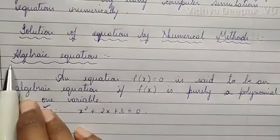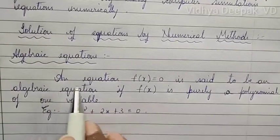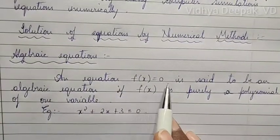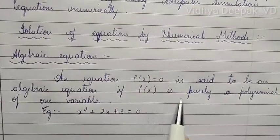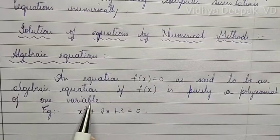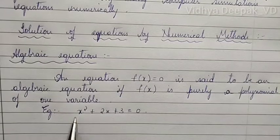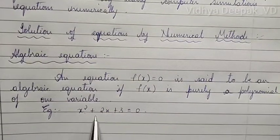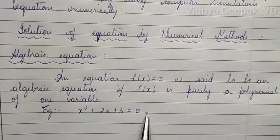First is algebraic equations. An equation f(x) = 0 is said to be an algebraic equation if f(x) is purely a polynomial of one variable. That means you are supposed to have only one unknown variable. Here you have an example: x² + 2x + 3 = 0. So this is an algebraic equation.